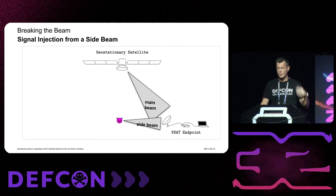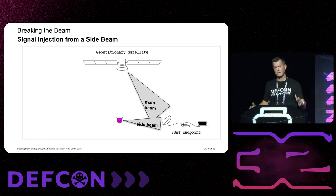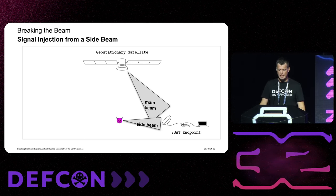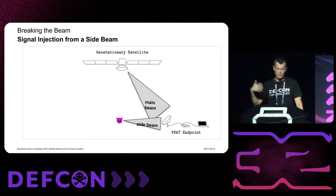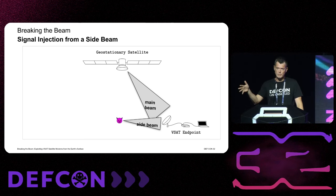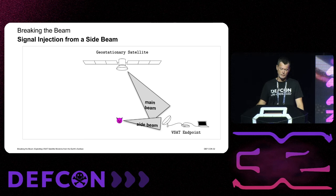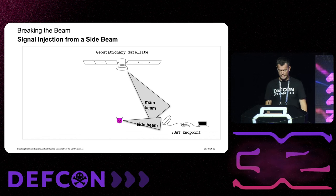Since the dish has very high directionality, it would seem difficult to inject signals from the side. But what we show in our research is that it is in fact possible to inject these attack signals from a side beam from earth.